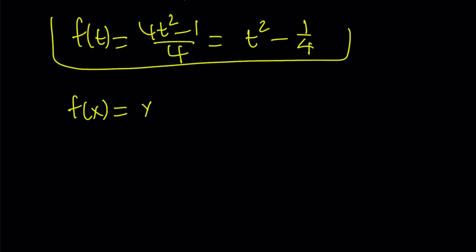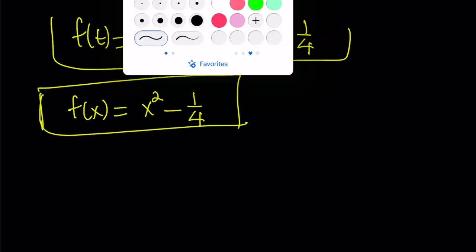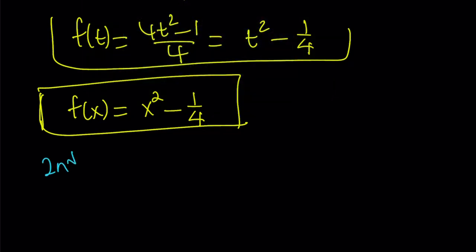I'm just going to replace t with x. Again, variables don't matter here. x squared minus 1 over 4. That is going to be our f of x. And this brings us to the end of the first method. Here's the second method.